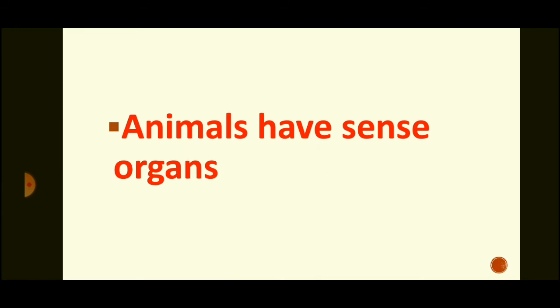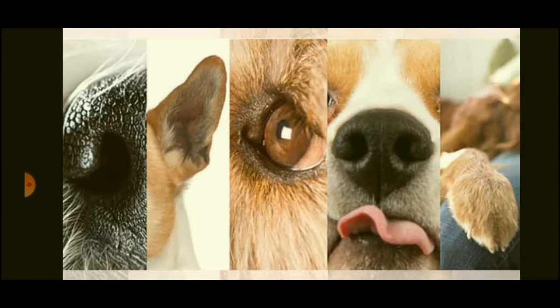Next point: animals have sense organs such as eyes, nose, ears, skin, and tongue. These organs help them to know about the world around them. But plants do not have sense organs — that is one difference between them. Eyes, nose, ears, tongue, and skin — all these sense organs are only found in animals, not in plants.